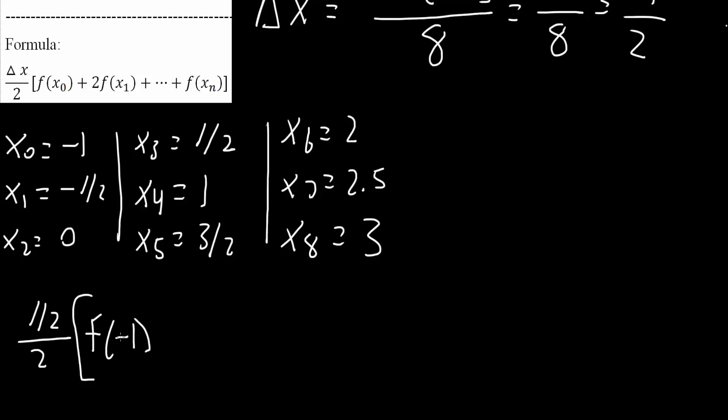What we will ultimately do here is plug in negative 1 in our equation, in our x squared plus 3 equation. But first, we're going to set this up. Plus, now this is an important part right here, the plus 2. It's going to be 2, a parenthesis, essentially, everything except this x0 and x8.